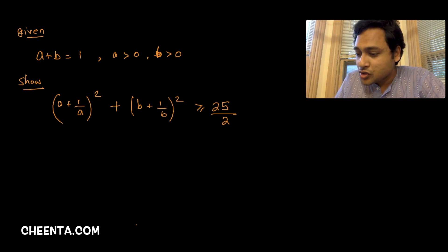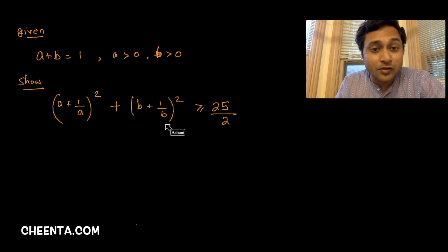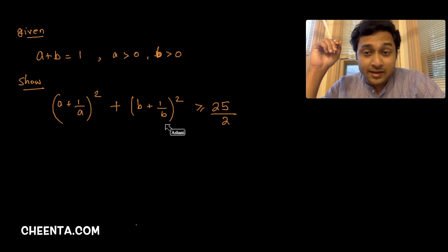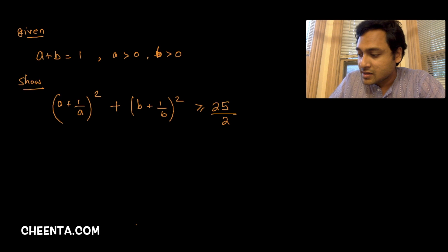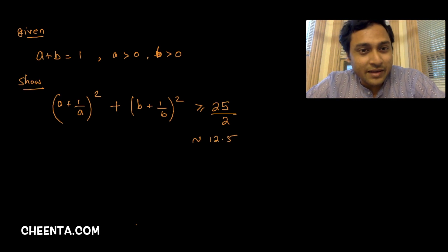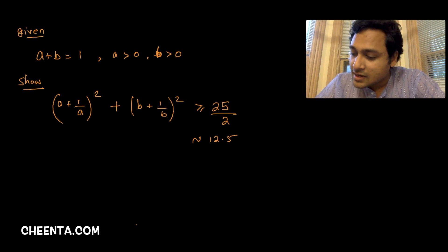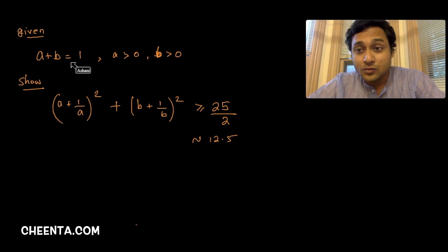We want to show that (a + 1/a)² + (b + 1/b)² is greater than or equal to 25/2, which is approximately 12.5. The conditions are that a is greater than 0, b is greater than 0, and a plus b equals 1.